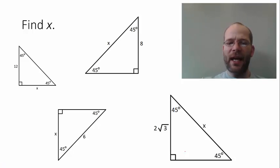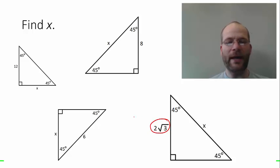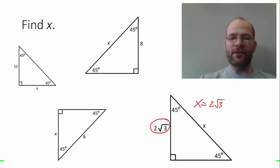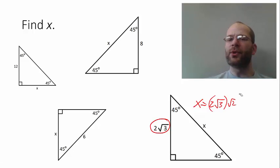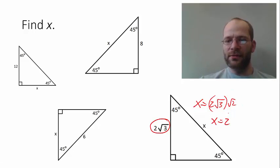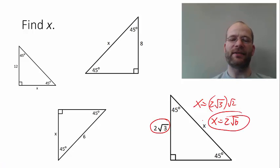Here's another example that already has a radical. The rule works exactly the same way: the hypotenuse equals the length of the leg, 2 square root of 3, times the square root of 2. Simplifying, that equals 2 times the square root of 6, and that's our answer.